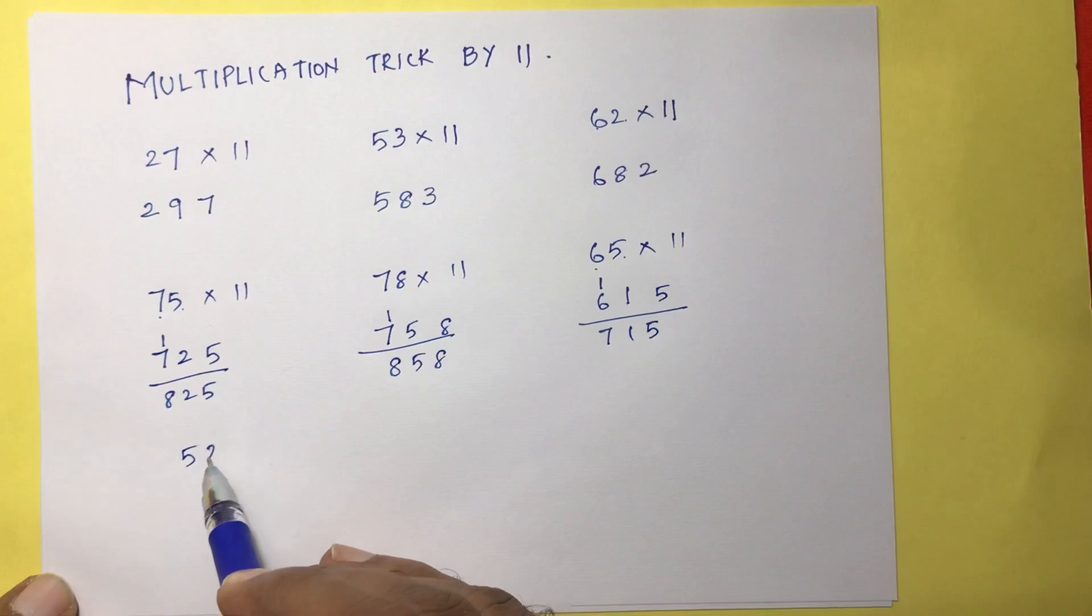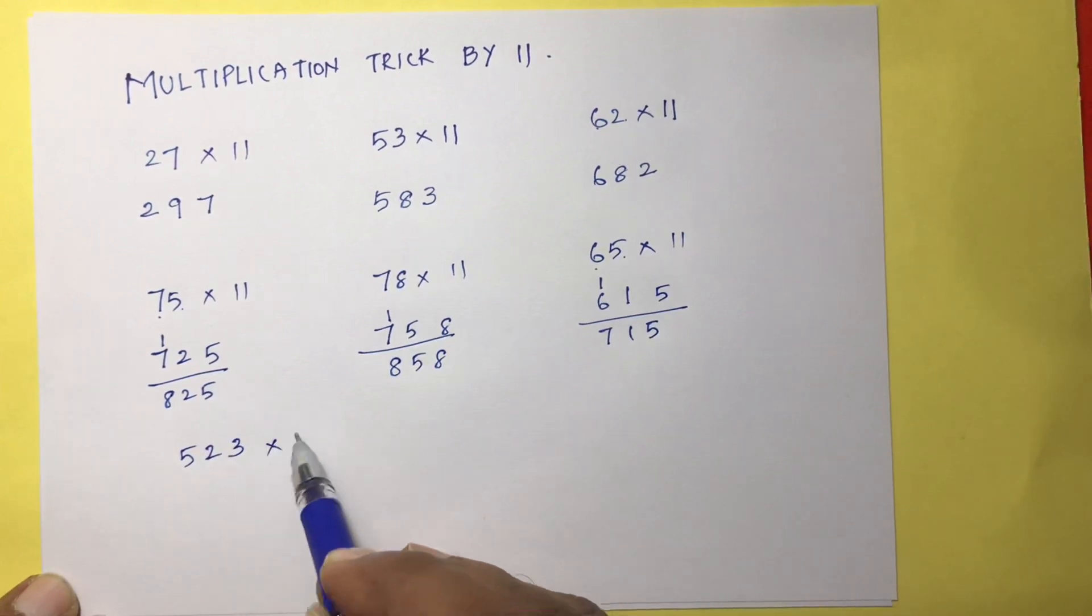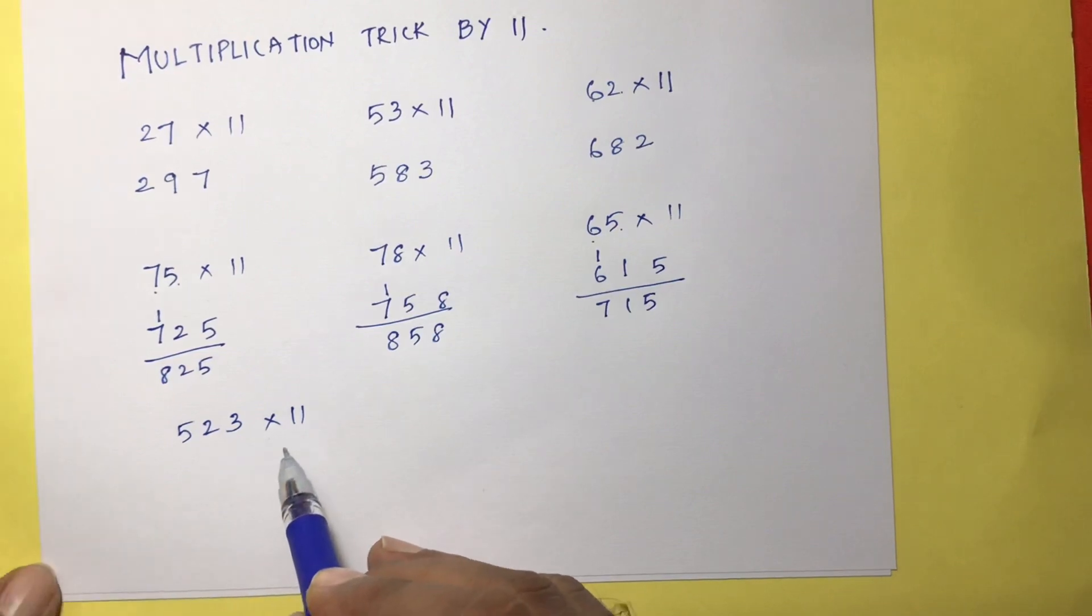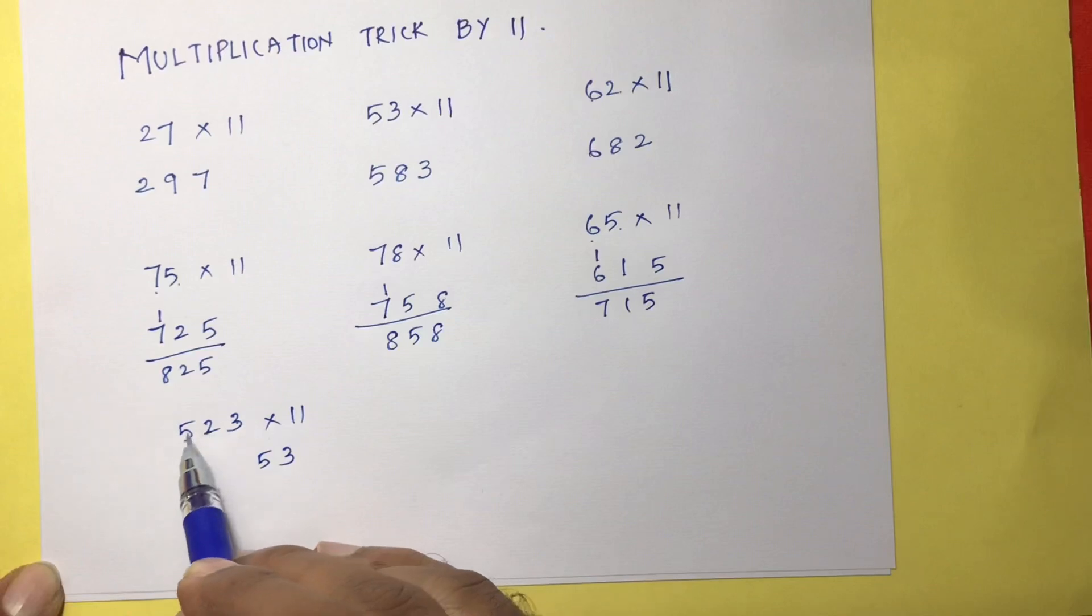523 into 11. So here, students, first write like this: 3, then 3 plus 2 is 5, then 2 plus 5 is 7, and at the end 5.